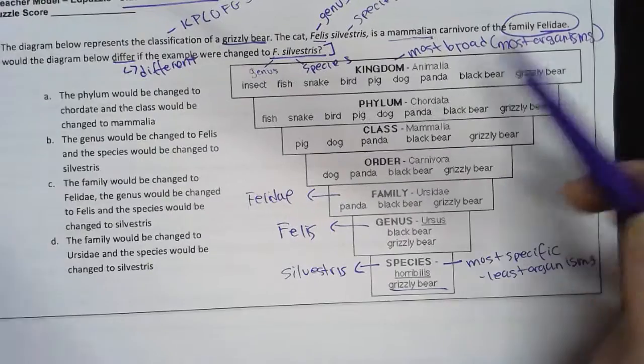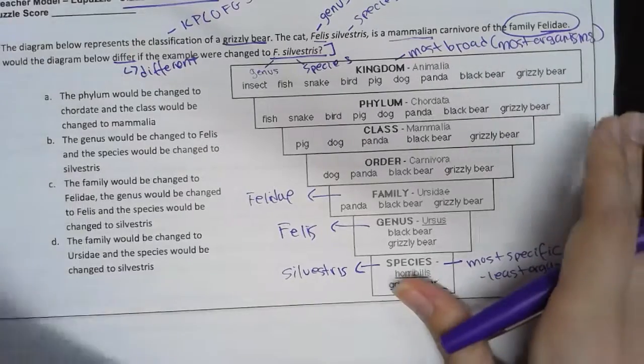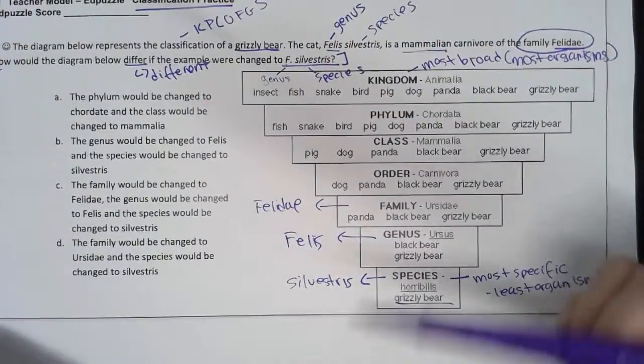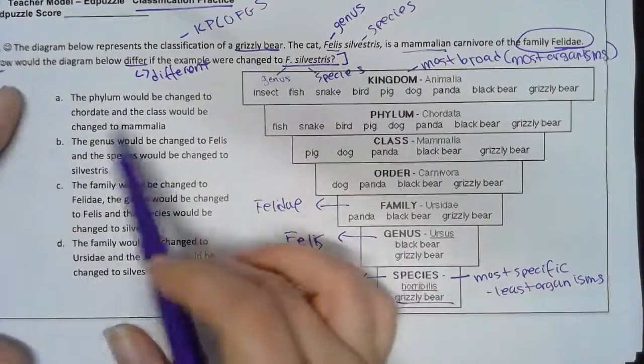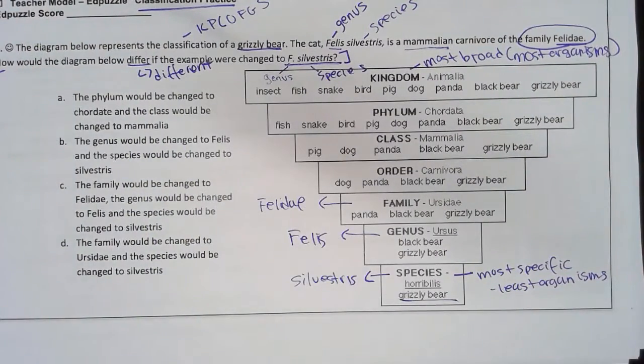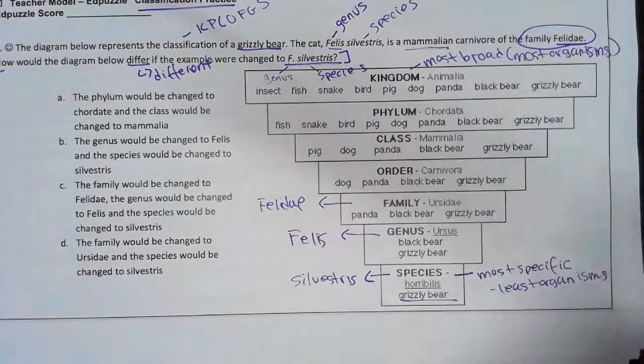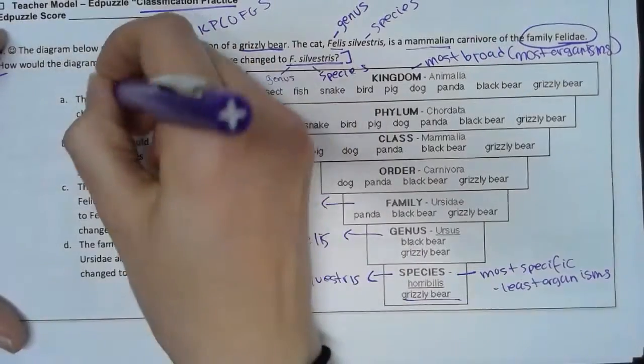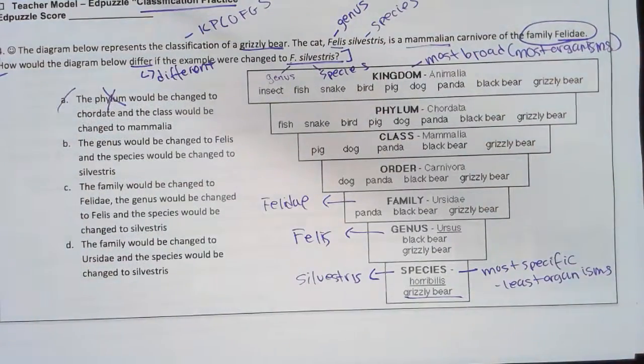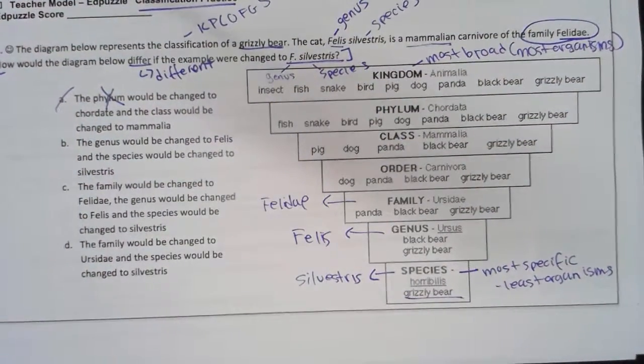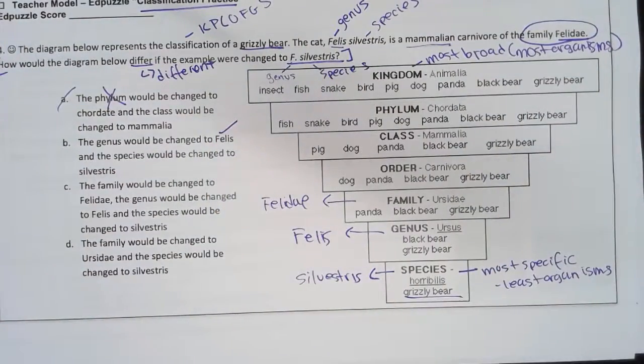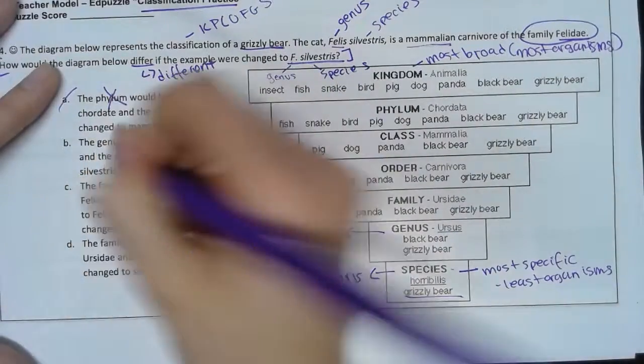I'm just going on what they show me - there are three things that changed, and that's what I'm going to look for in my answer choice. Option A: 'The phylum would be changed' - this made no mention of a phylum, so bye bye. Option B: 'The genus would be changed to Felis' - yes, that's true. 'The species would be changed to Silvestris' - absolutely.